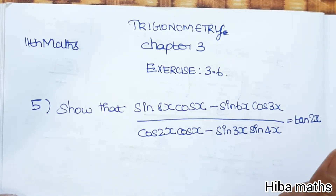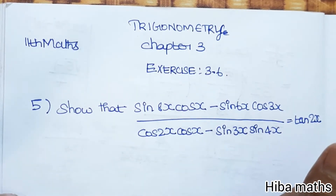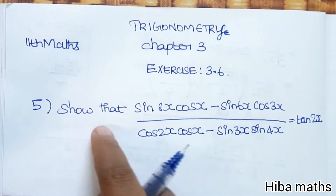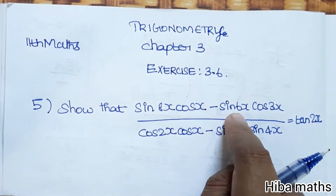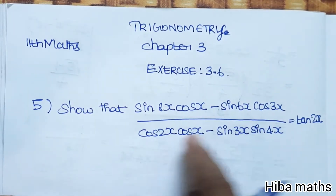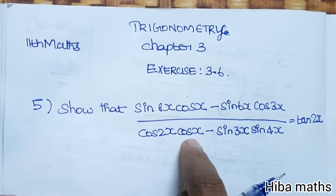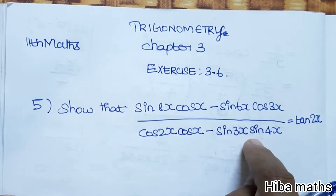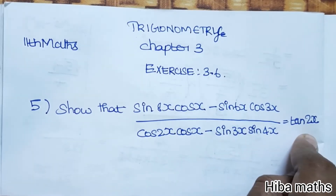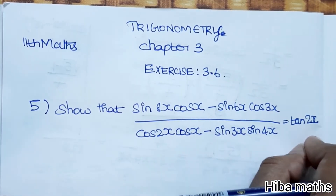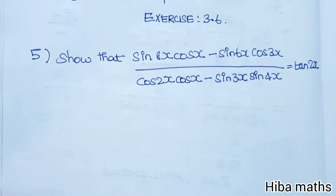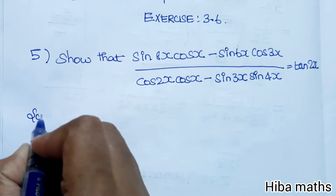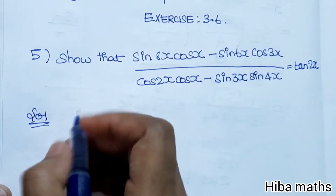Hello students, welcome to Hiba Max. This is 11th standard Maths trigonometry, Chapter 3, Exercise 3.6. We have a question to show that — LHS is the number to solve, RHS is tan 2x, and we need to prove it. There are many identities we need to use here, so let's look at the solution carefully.